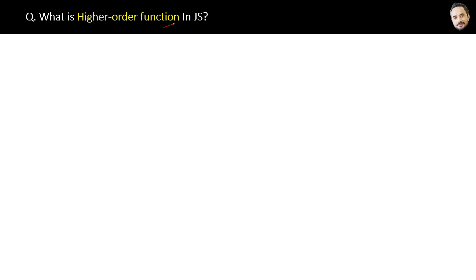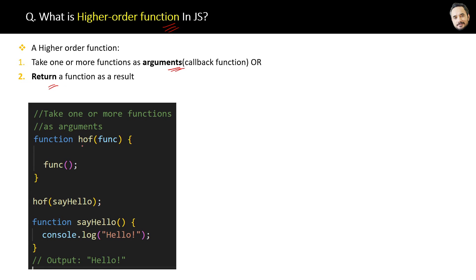What is a higher order function in JavaScript? We already know about callback functions. Now we call a function a higher order function if two things: if it takes one or more functions as arguments, or it returns a function as a result.